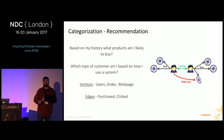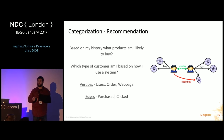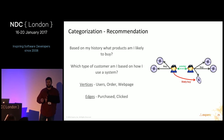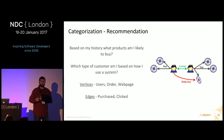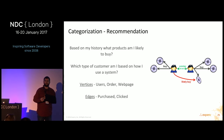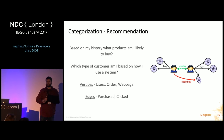Categorization: a recommendation engine is a good example — based on my purchasing history, what am I likely to buy? What type of customer am I? Vertices would be users, orders, or web pages for click-stream tracking; edges would be 'purchased' or 'clicked.' We've worked with customers who have click streams coming in and want to categorize users into different groups to show targeted advertising.